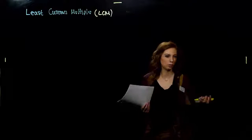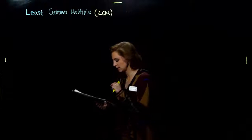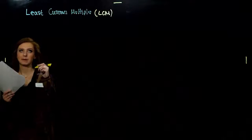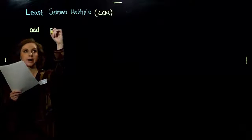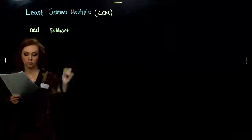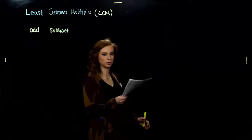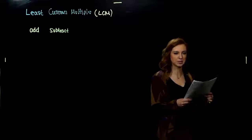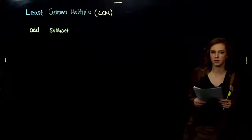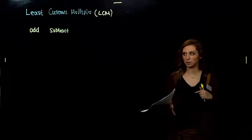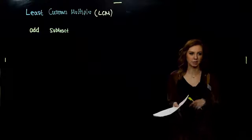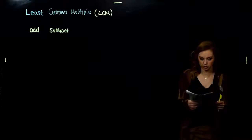Least common multiples are used in algebra because we need to have common denominators to be able to add and subtract with fraction notation. With fractions, we need common denominators to combine them. So how do we find those common denominators? I want to work with the smallest thing that's common so I don't have to deal with large numbers.